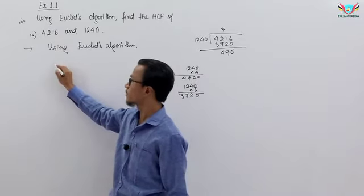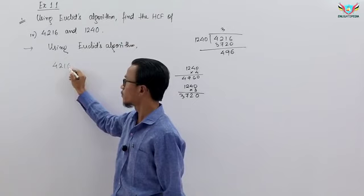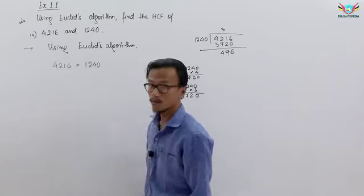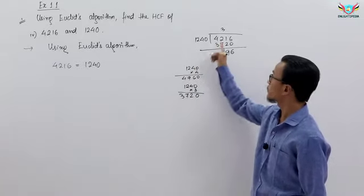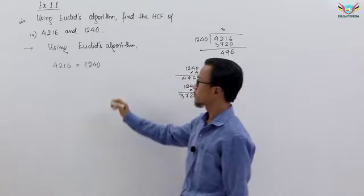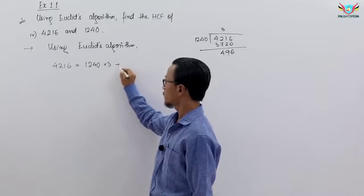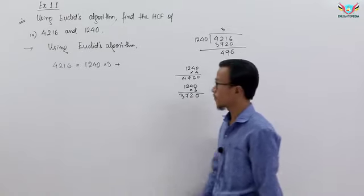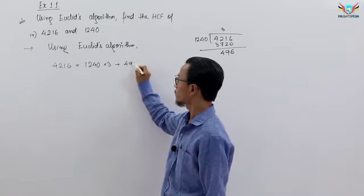These are the tickets received 4216. So this is equal to divisor is 1240 into quotient, quotient is 3. So this is into quotient plus remainder. So the remainder here is, remainder is 496, plus 496.